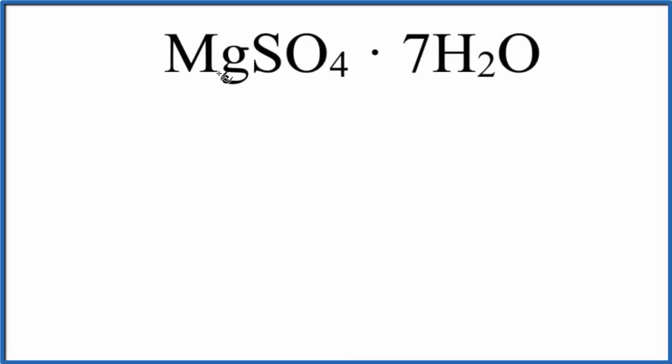In this video, we'll find the number of atoms in MgSO₄·7H₂O. This is magnesium sulfate heptahydrate.